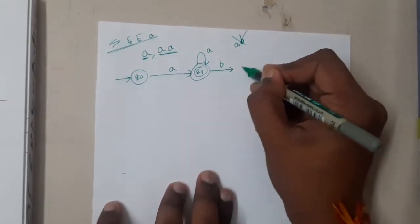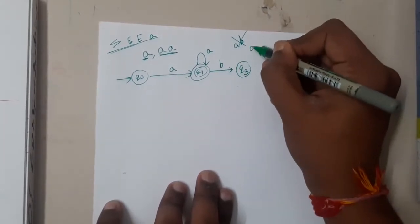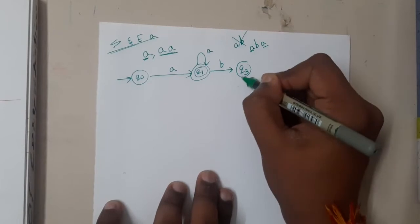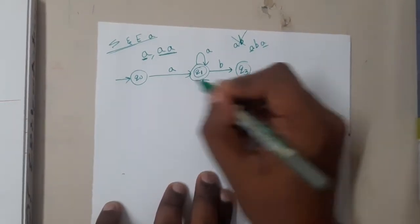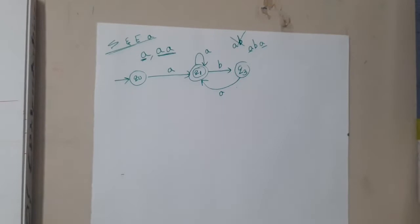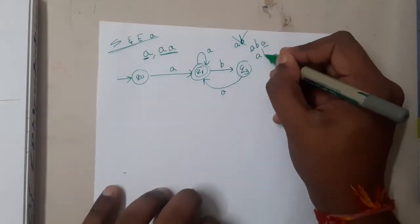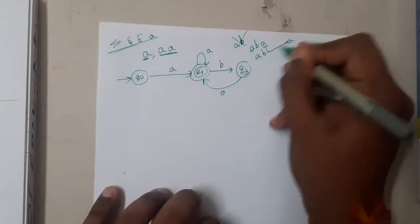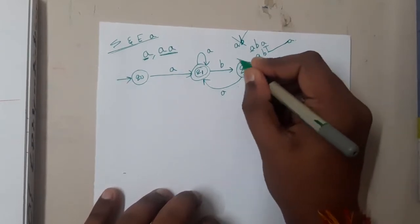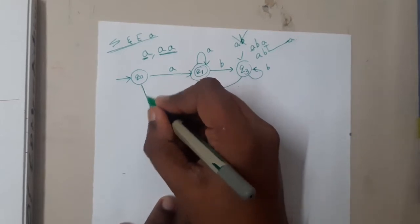That is why we go through another state — let us name it 'b'. If the string is 'aba', we need to return back with that 'a', since we started with 'a' and ended with 'a'. And if in between there are multiple b's, like 'abbbbbba', we loop here on 'b'.